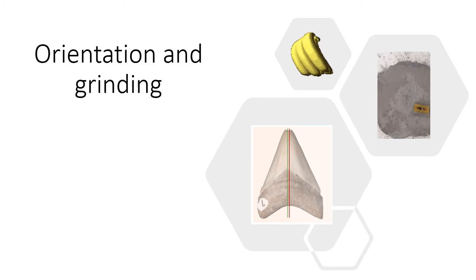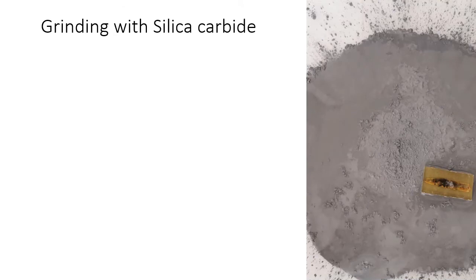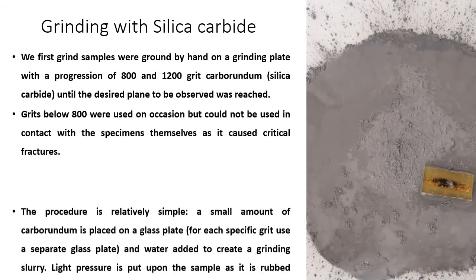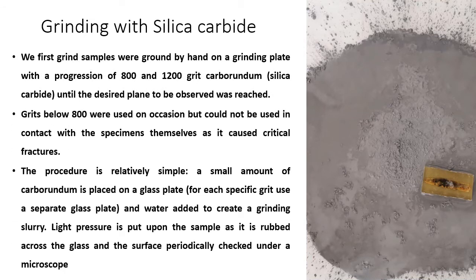Once you've made all your decisions it comes down to your orientation and grinding. We recommend once you have your resin block and your sample suspended in the resin that you grind with silica carbide. This helps remove excess resin and helps with the orientation process. We generally go for 800 and 1200 grit, because any grits above that can actually really damage your specimen and have some critical failures.